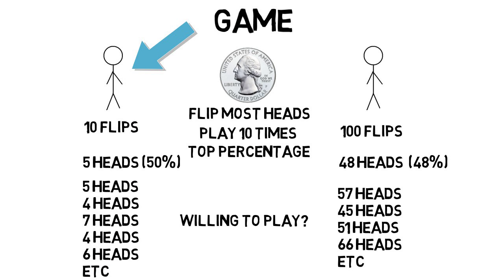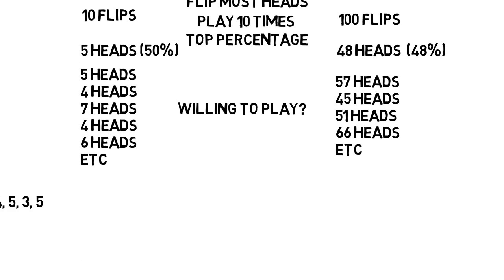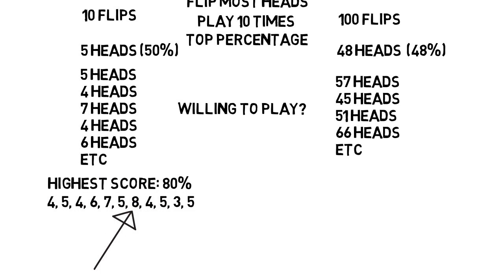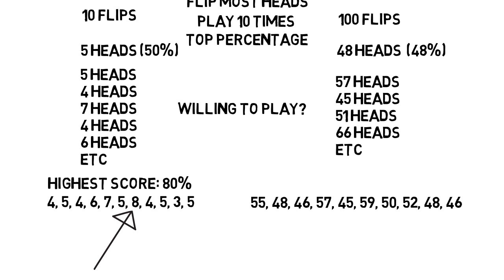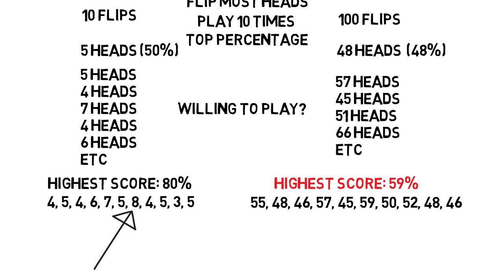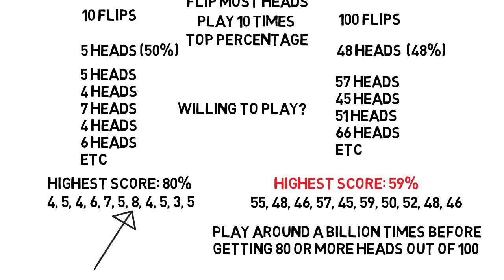When the person on the left flips a coin 10 times for 10 different trials, there's a chance they might have an 8 or 9 in there somewhere, and that would be their highest score — in this case 80%. But with the other person flipping 100 times for 10 trials, their results are much closer to 50. The highest percentage here is 59% and they'd lose. You'd probably have to play this game a billion times before you got 80 or more heads out of 100.